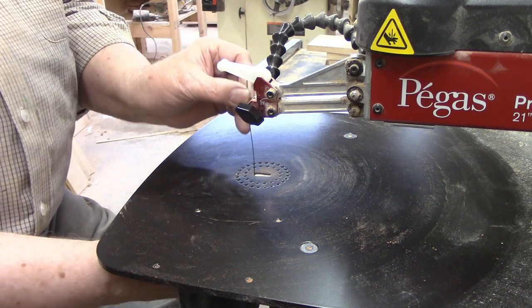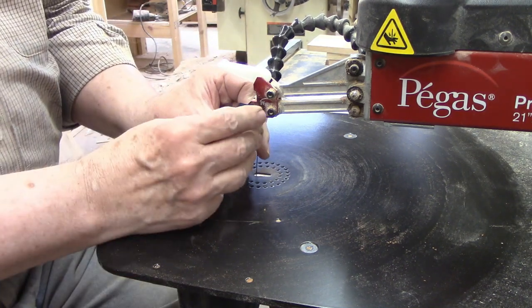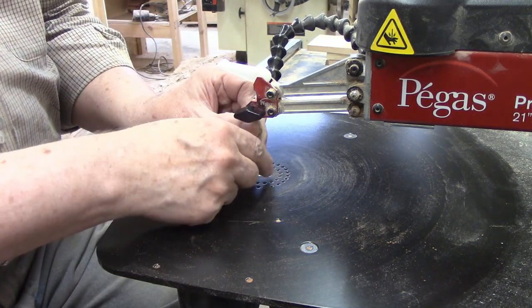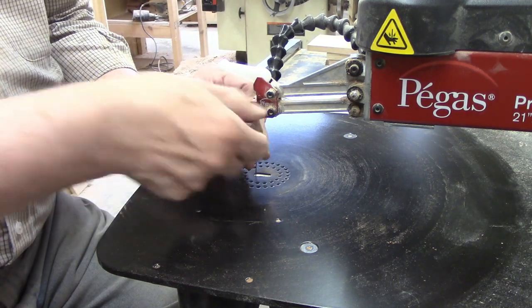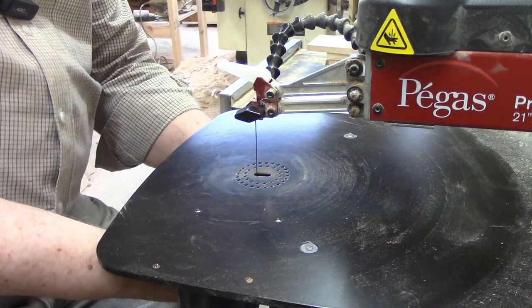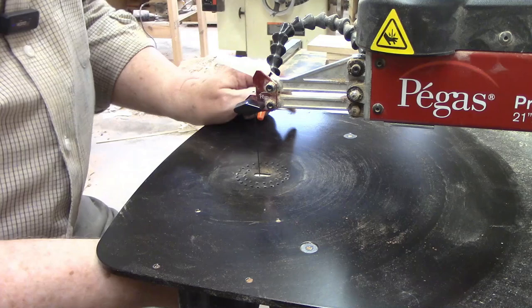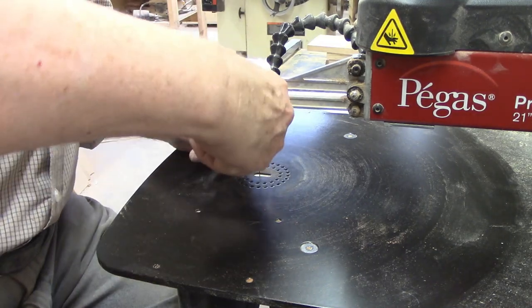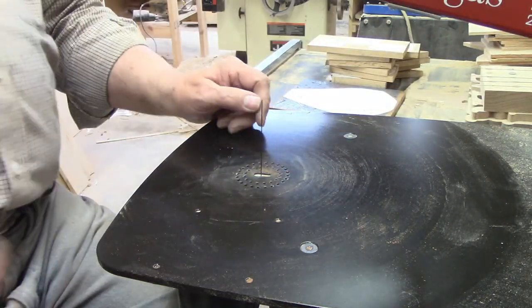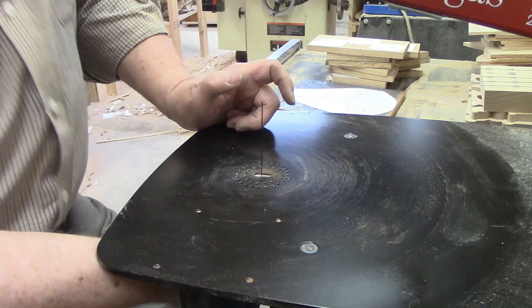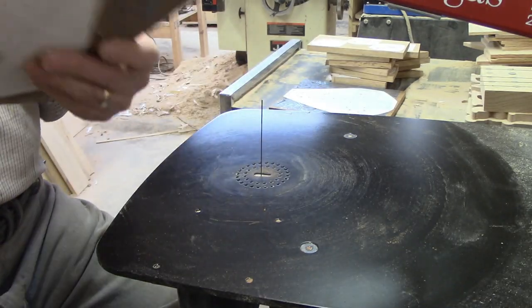Having to change the blade gives me an opportunity to point out one of the excellent features of the Pegas scroll saw. Both the upper and lower blade holders feature thumb screws to tighten the blade so no tools are needed. I've worked with scroll saws that require some sort of tool and they can be cumbersome and slow you down anytime you need to change a blade.